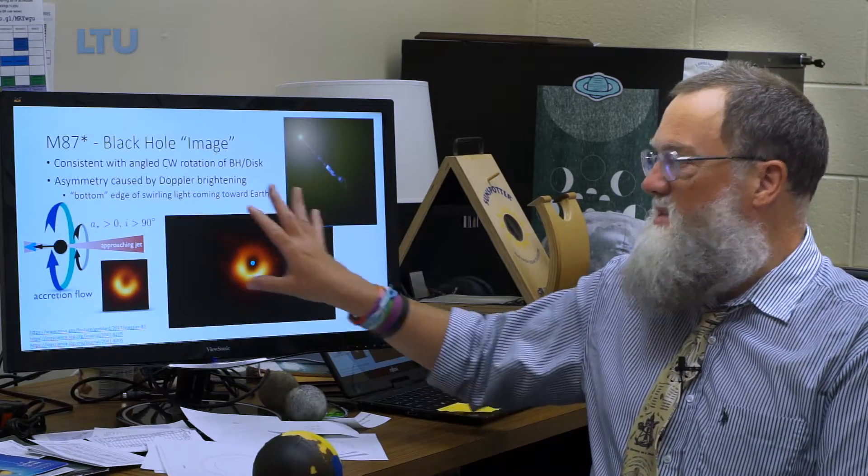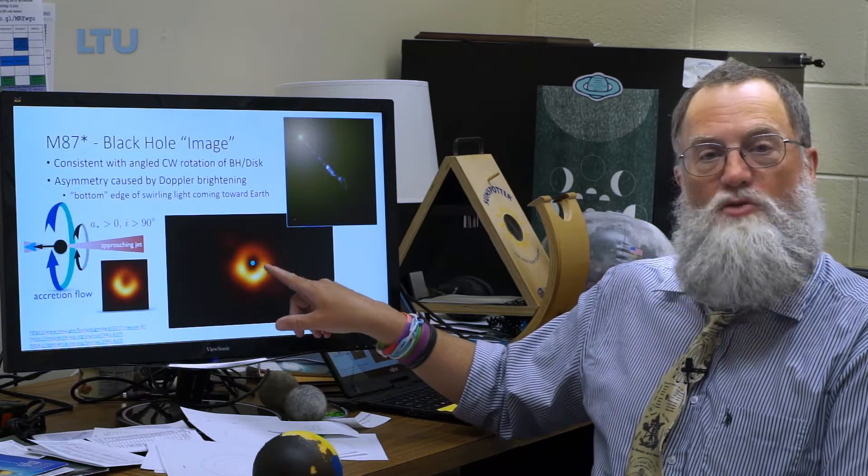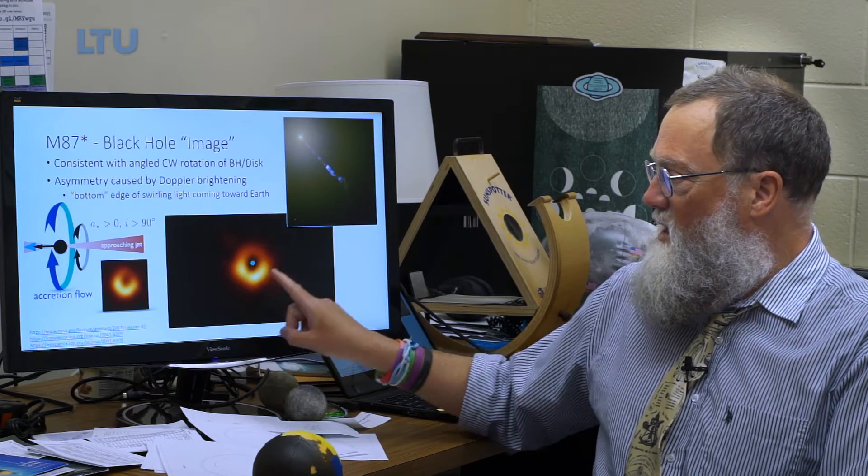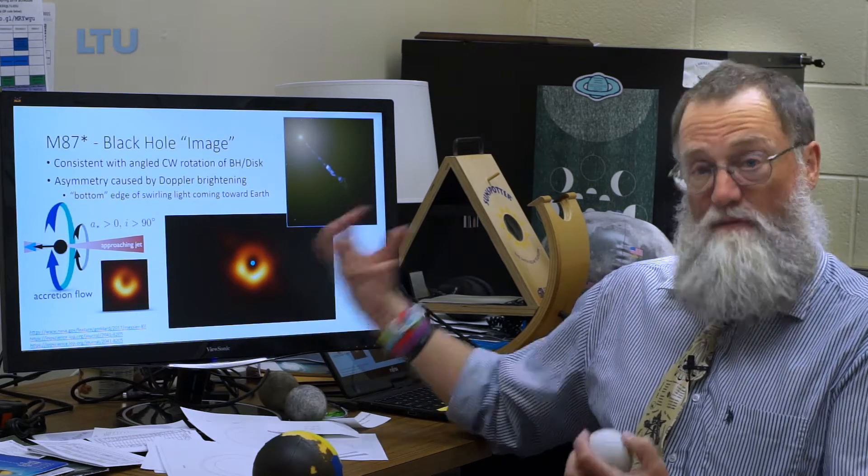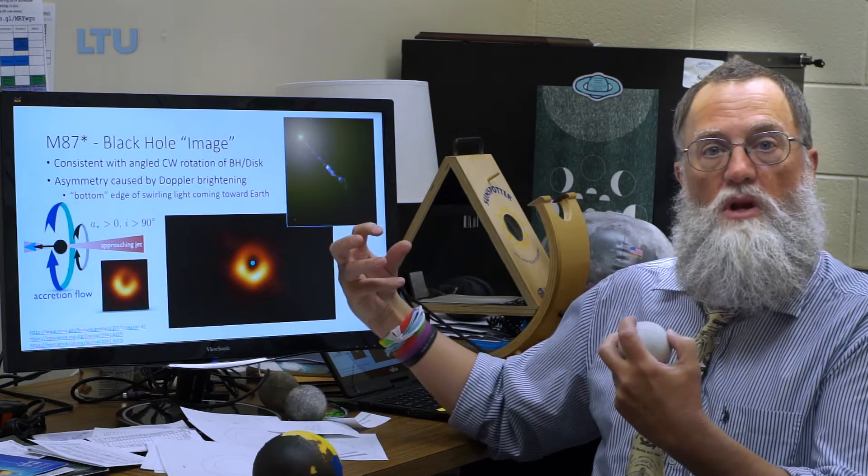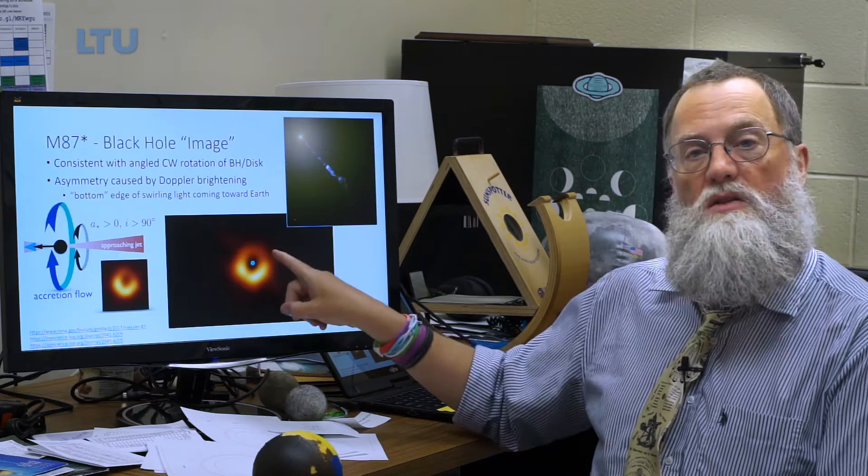What we're looking at here, this is the image that was released, except I added the blue dot. This is the radio wavelength information that came to us. If it's brighter, it's a stronger, more intense signal. If it's dimmer, it's a less intense signal.